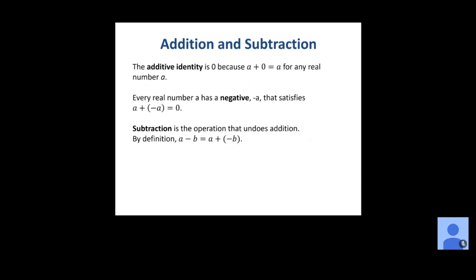Now addition and subtraction. The additive identity is zero — any real number plus zero gives back that same number, for all real numbers. Every real number a also has a negative called negative a, which satisfies a plus negative a equals zero. Any real number plus its opposite cancels out to give zero. Subtraction is the operation that undoes addition, so by definition a minus b is the same as a plus negative b.